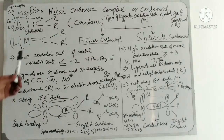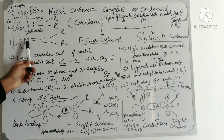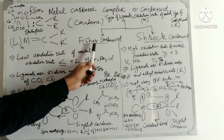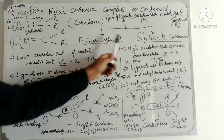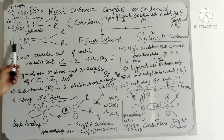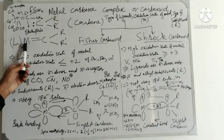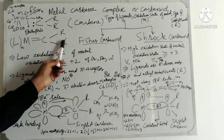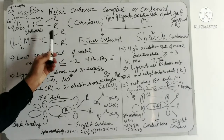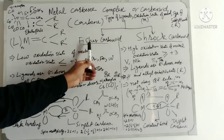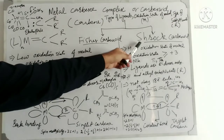Depending on how we classify, metal carbene complexes or carbenoids are classified into two main classes: Fischer Carbenoid or Schrock Carbenoid, depending on the type of the ligand attached to the metals, the oxidation state of the metals, and the type of substituents attached to the carbene carbon. These two are the main categories of carbenoids.